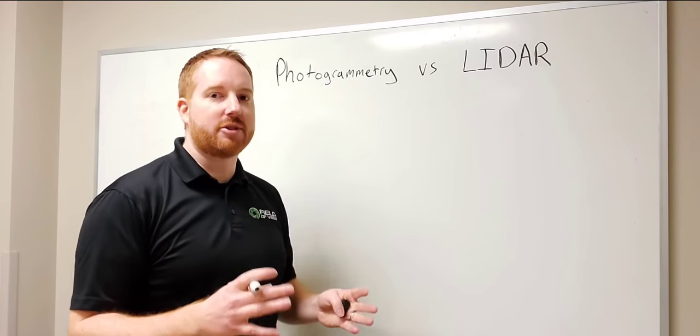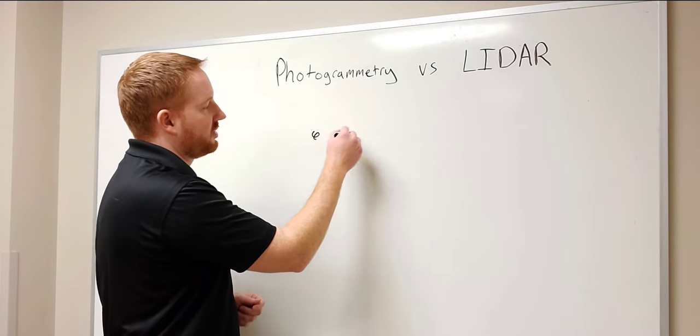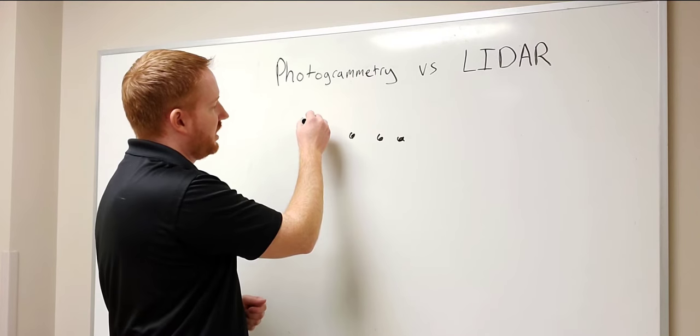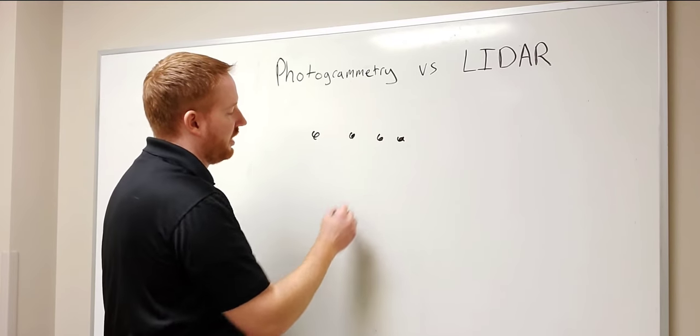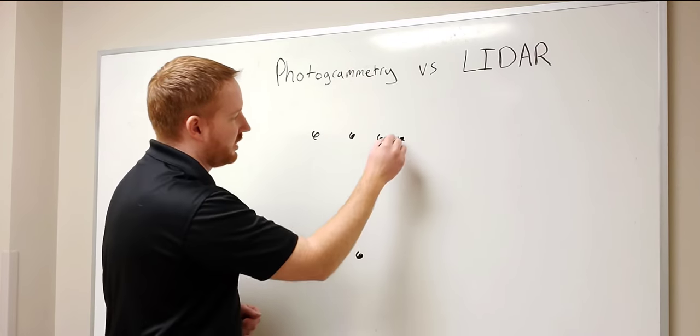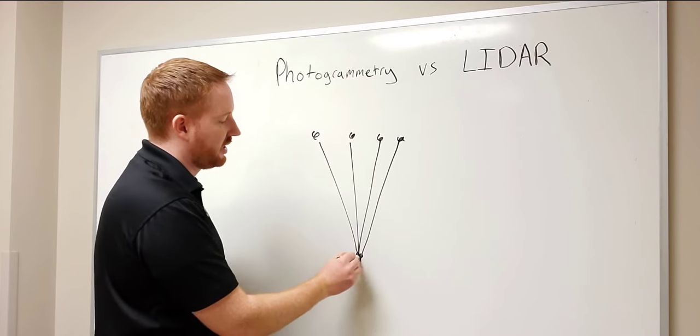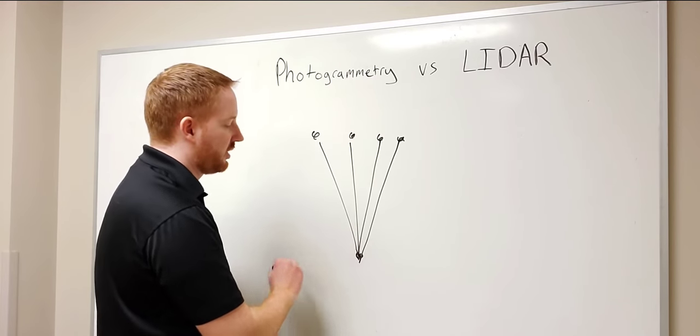So when we talk about photogrammetry, you can think of aerial images being captured with a high amount of overlap and where you have GPS data for every single image. With that information, the software is able to triangulate the location of every point that's imaged so we can create a 3D model of whatever we're flying over.